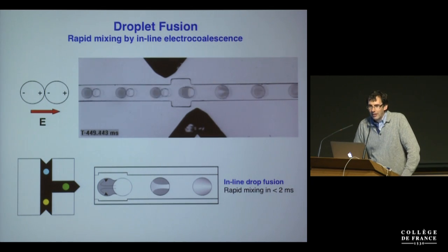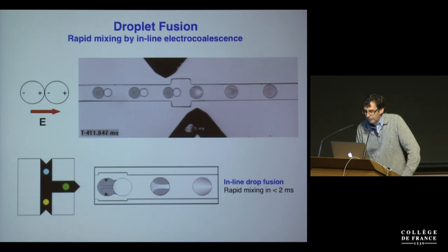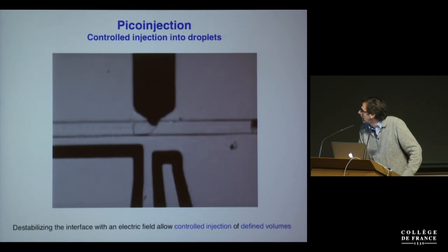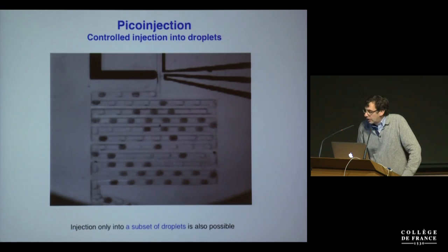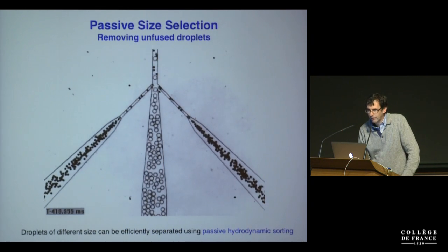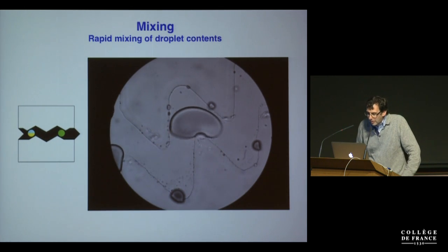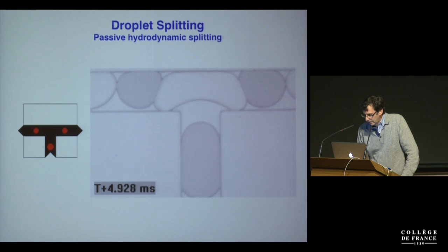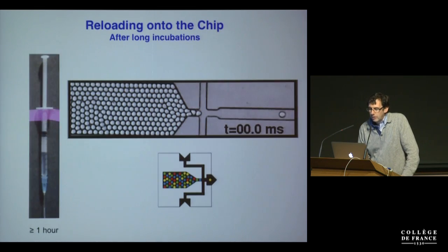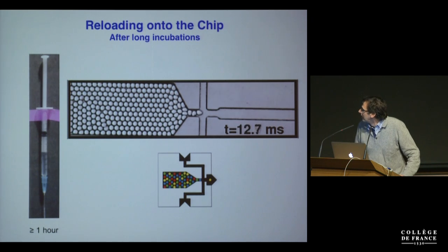You can do all sorts of other really fun things with droplets in microfluidic systems. For example, you can fuse droplets together using electrical fields. You can also destabilize the interface with electrical fields to allow a controlled injection of defined volumes of liquids into droplets — this is so-called pico-injection. You can inject into a certain subset of droplets, separate droplets based on their size, mix contents by sending them around chicanes in just two milliseconds, split droplets symmetrically and asymmetrically, and incubate droplets on chip in delay lines. For longer incubation, you can simply take the droplets off chip, incubate them in a syringe, and then re-inject them on chip again.